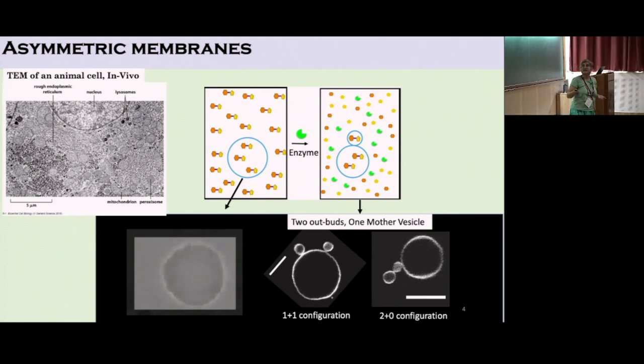What we found is that it creates positive curvature in the form of buds and it can also form tubes. It starts exhibiting shape changes in the membrane compartment. To start with I had a vesicle like this, a giant unilamellar vesicle, and I could get conformations like this the moment I make it asymmetric.